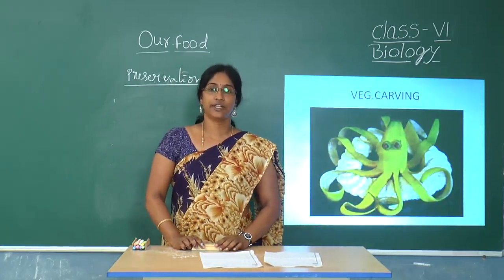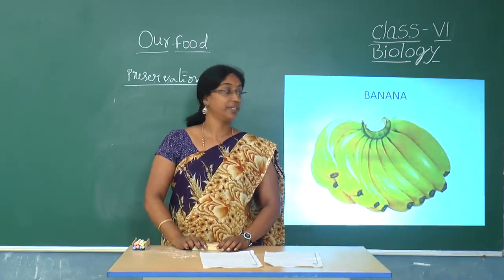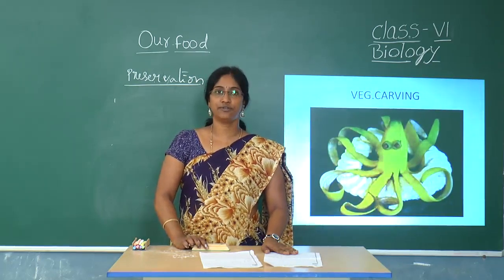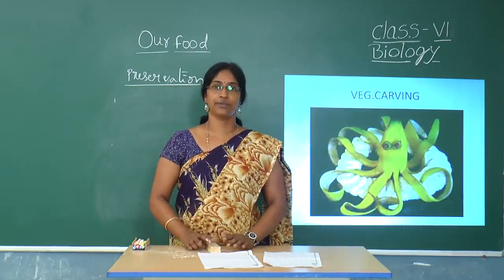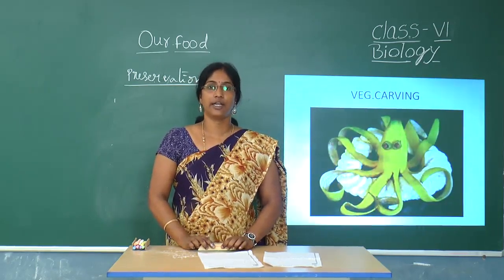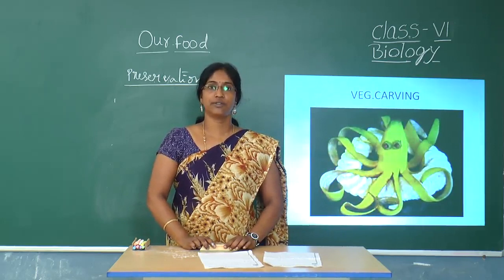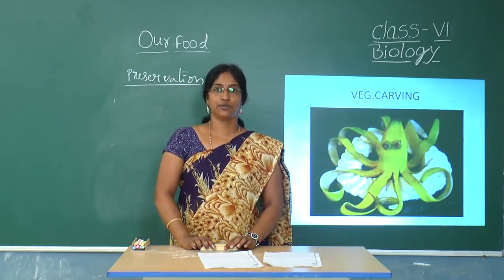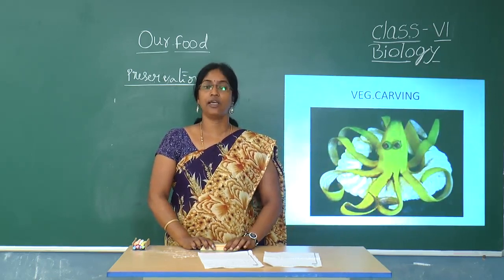Before winding up the session, let us recall the important points. Food materials are prepared with various kinds of ingredients — ingredients meaning the materials required for preparation of food. The sources of ingredients are three types: plant sources, animal sources, and other sources. Plant source examples are fruits, vegetables, condiments, and dry fruits. Animal sources are meat, milk, eggs, and honey. Other source: salt, which does not belong to either plant or animal source. There are different methods of preservation like sun drying, salting, smoking, and pickling.